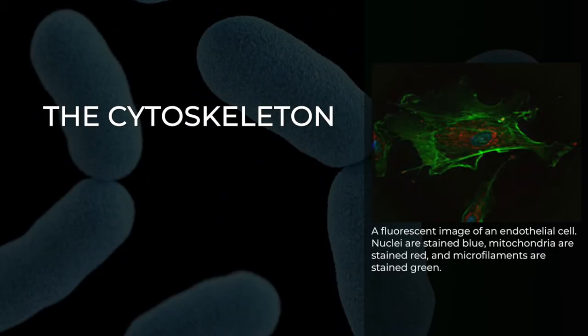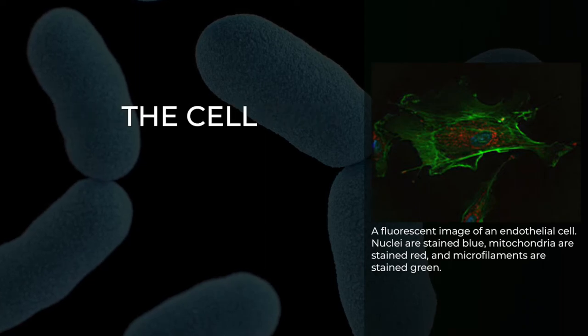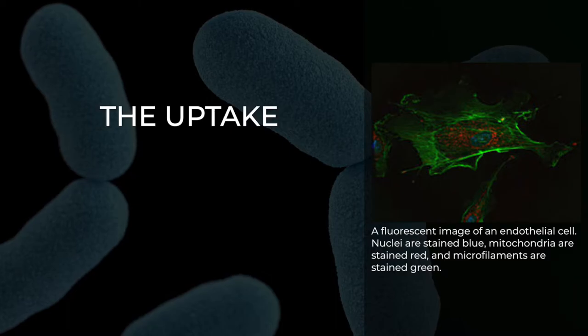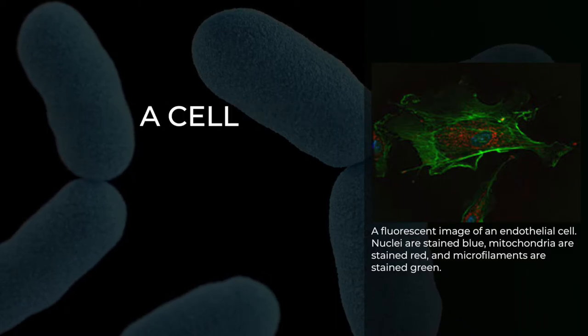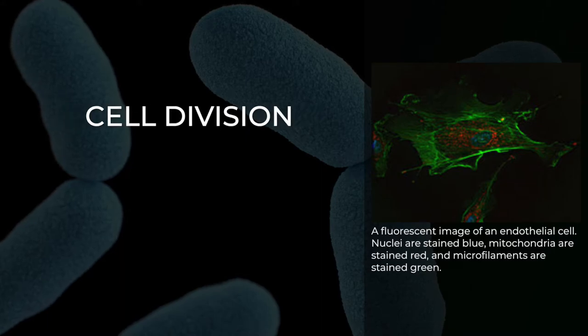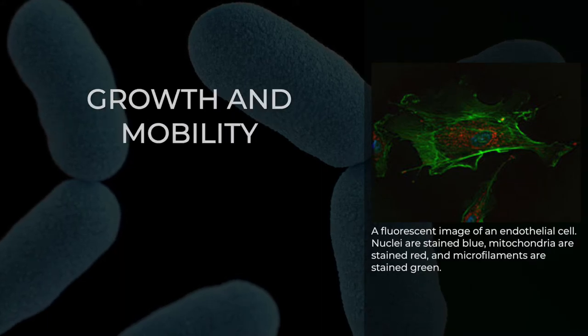The cytoskeleton acts to organize and maintain the cell's shape, anchors organelles in place, helps during endocytosis, the uptake of external materials by a cell, and cytokinesis, the separation of daughter cells after cell division, and moves parts of the cell in processes of growth and mobility.